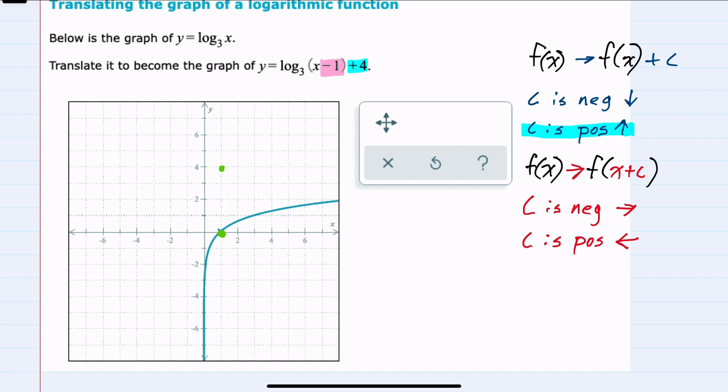But then the x minus 1, since the 1 is negative, that will shift to the right 1 unit. So our entire graph shifts to the right 1 unit. So that point shifted up 4 and to the right 1.